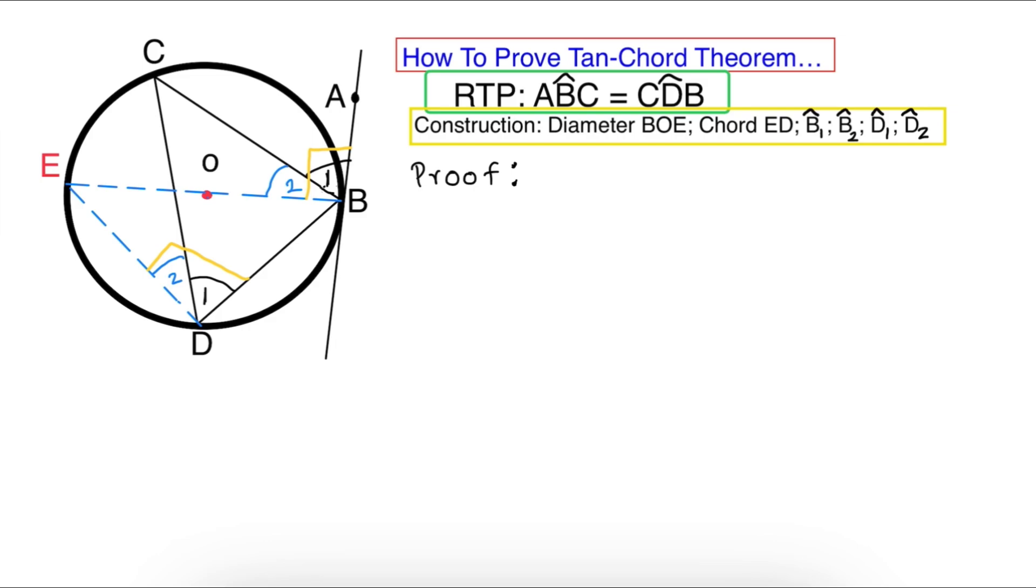You also construct B₁, B₂ and also D₁ and D₂. Bear in mind, the B₁ and D₁ are the angles that you are proving, so your ones are gonna be the angles that you are proving and your twos, the ones I wrote in blue, are gonna be the constructed angles.